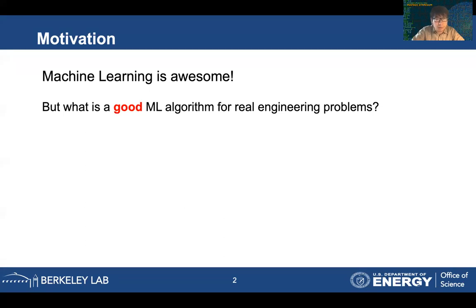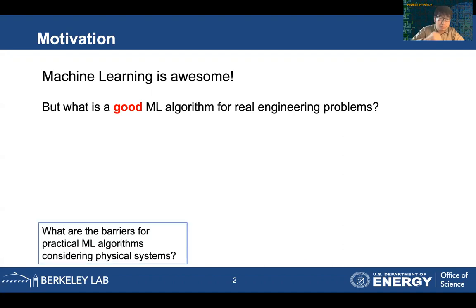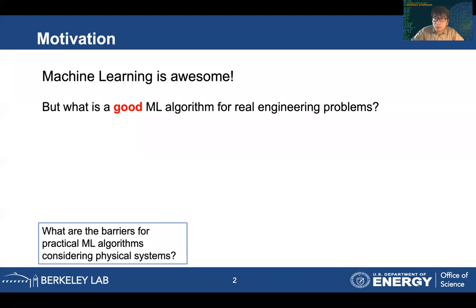As everyone may already know, machine learning is quite awesome and it's progressing at a really fast pace these days. So what is a good machine learning algorithm for engineering problems? And specifically, when considering an engineering problem, what could be the barriers for real practical machine learning algorithms, considering all the physical system constraints and dynamics?